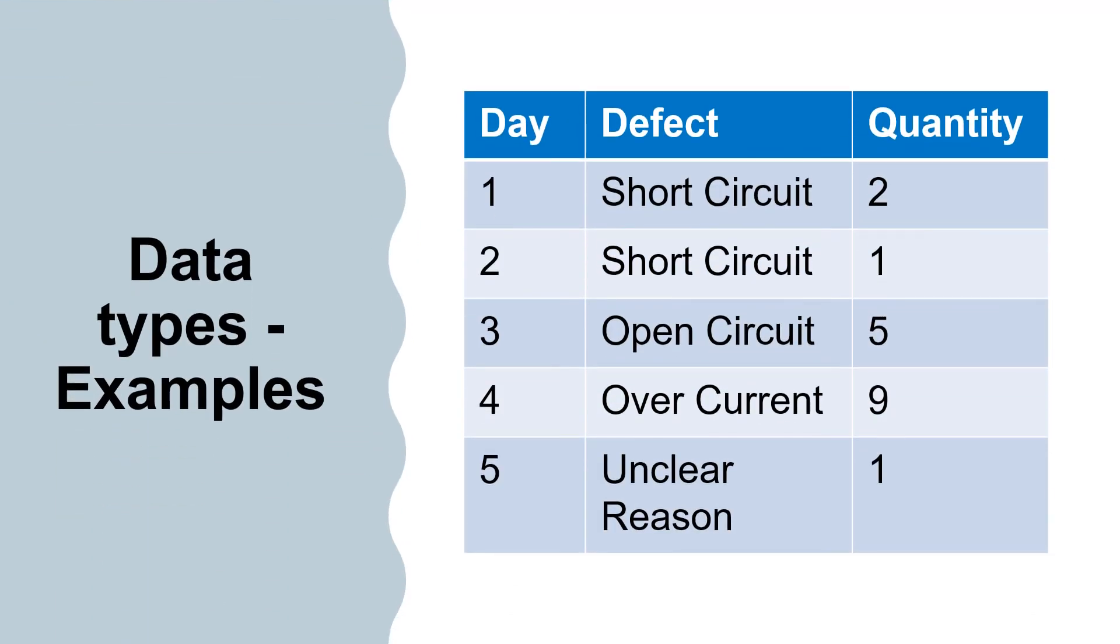The engineer keeps track of the number of defects shipped each week. So is the number of defects shipped this week continuous, count, or categorical?